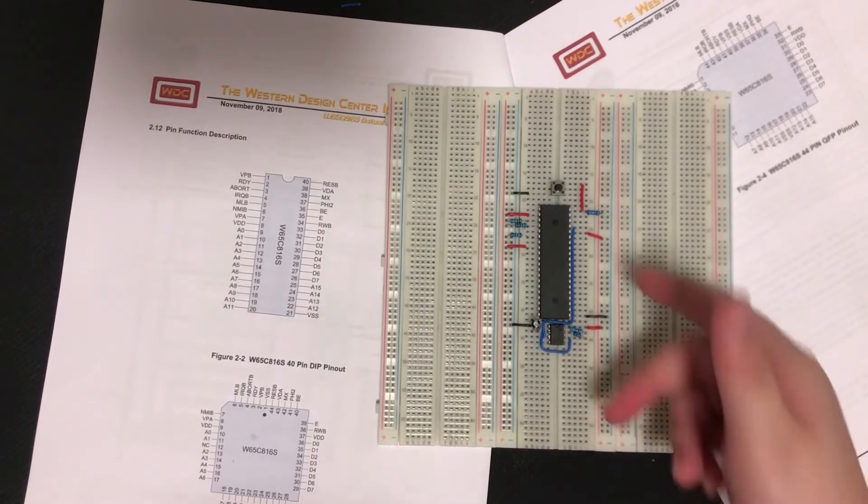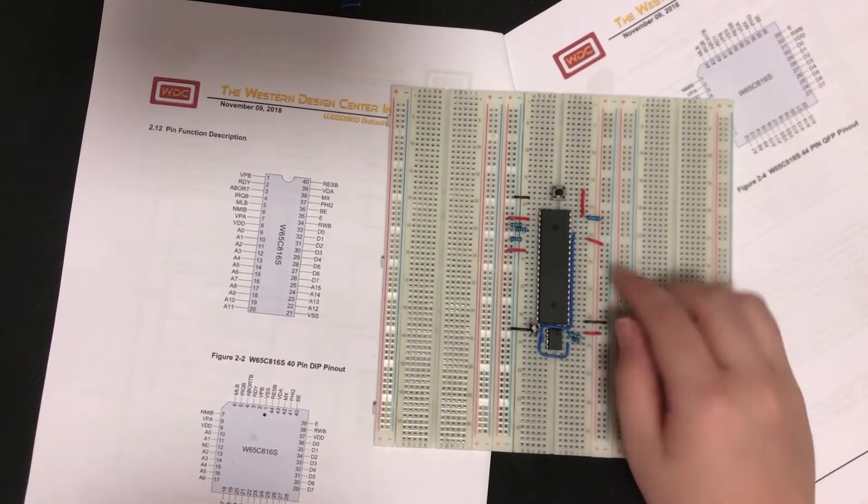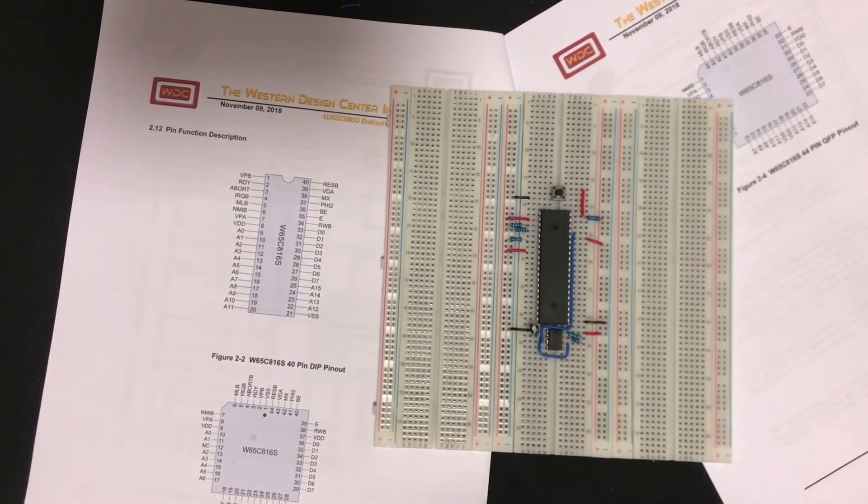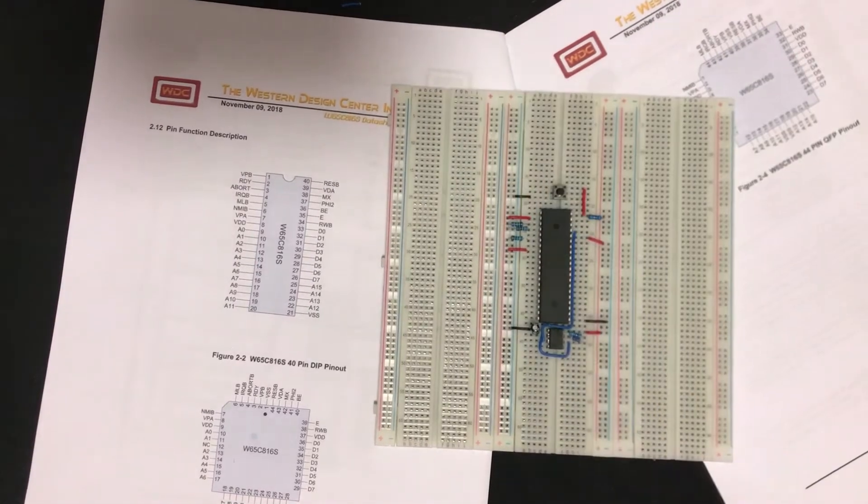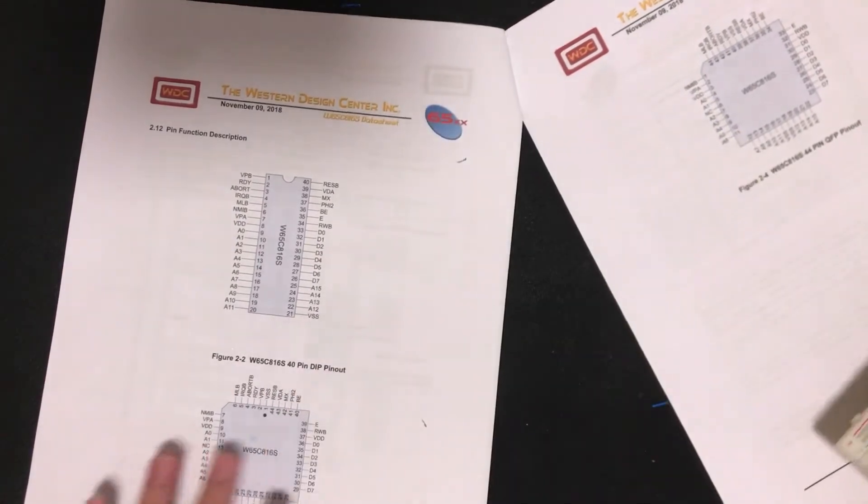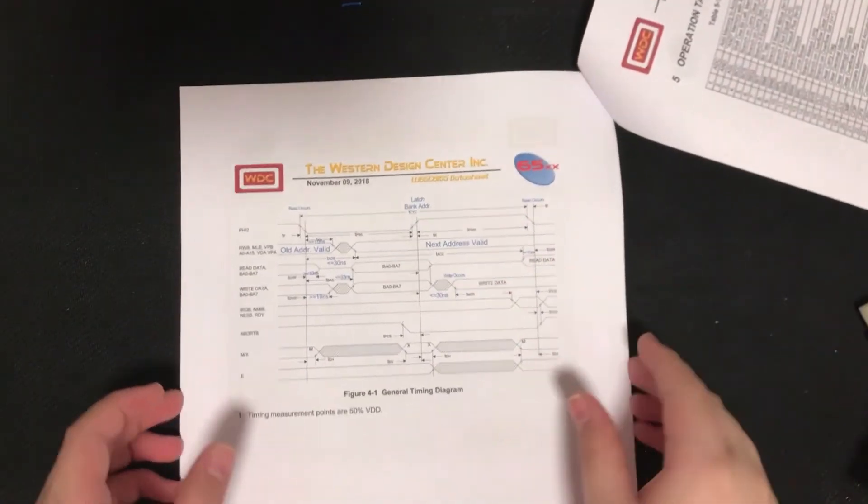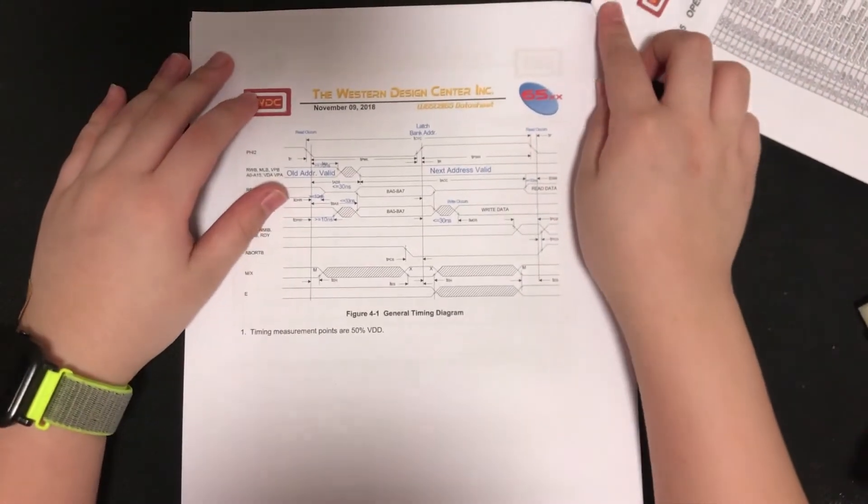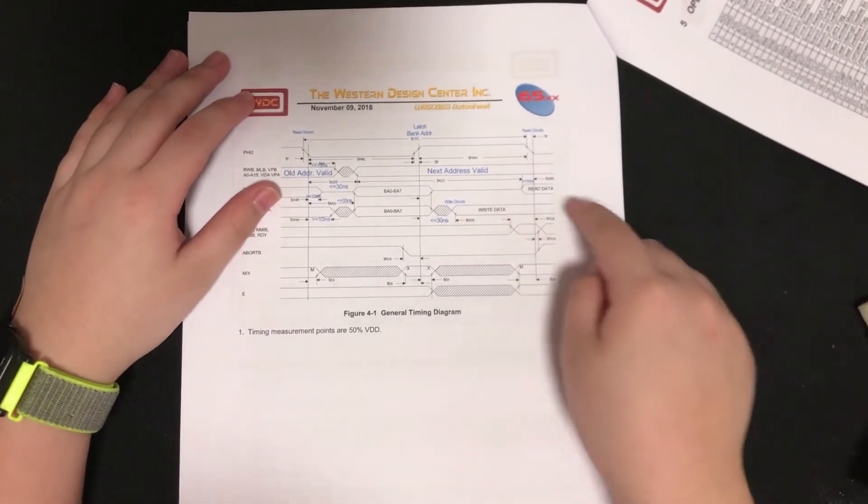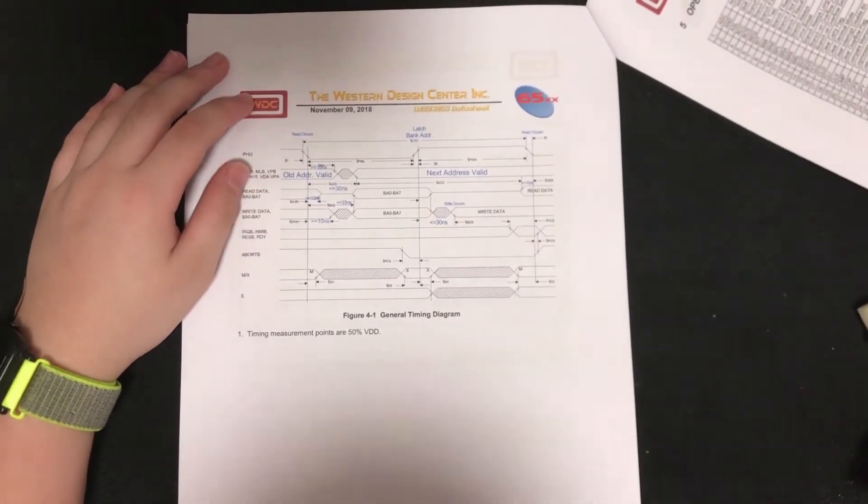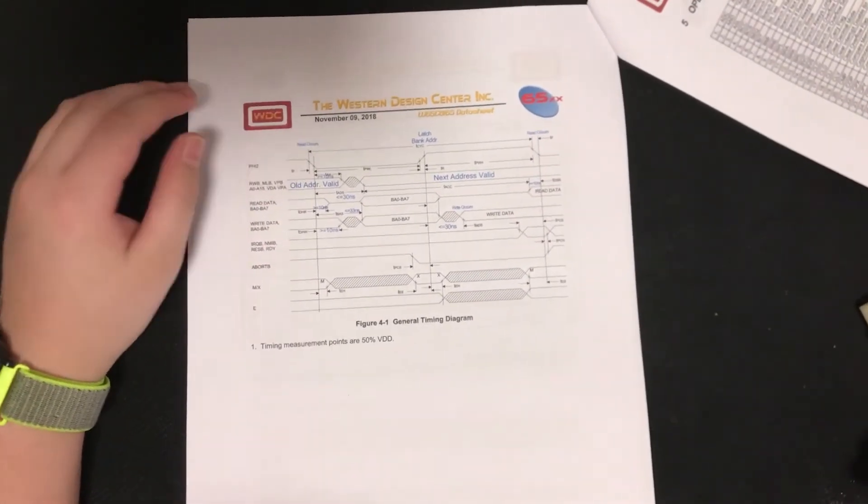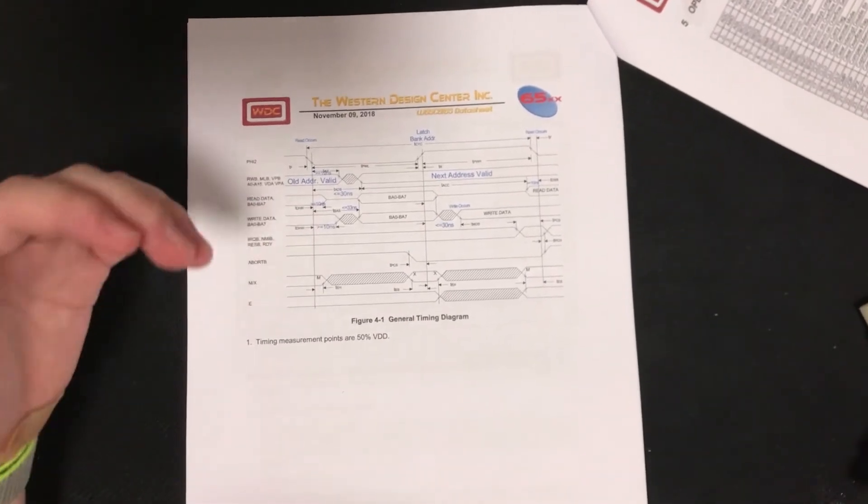However, remember, the data bus is multiplexed with the address lines. So how do we figure this out? The first step is to look at the timing diagram. Let me just flip to page 28. I've made some notes here to make it easier to understand. They've included some key times so that we can better make sense of what's going on.